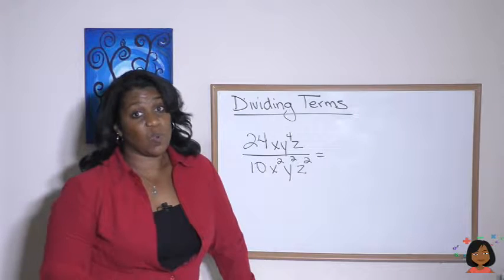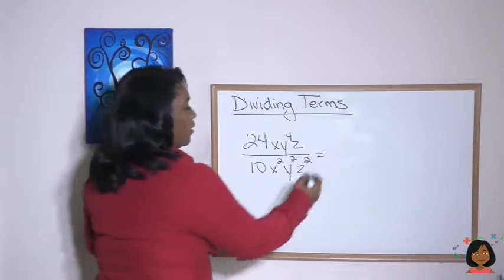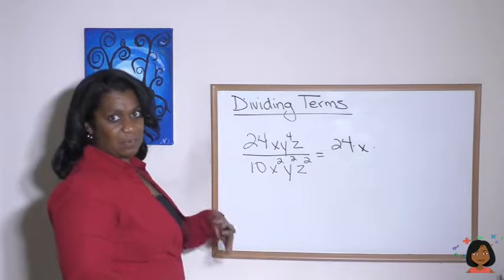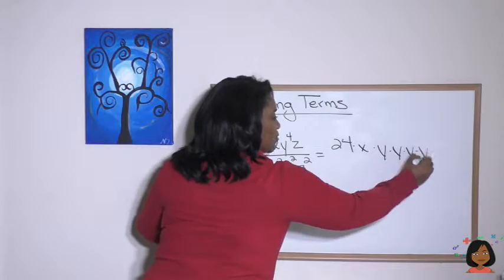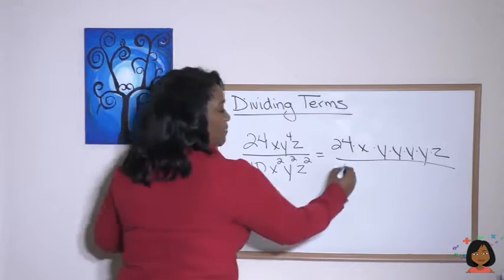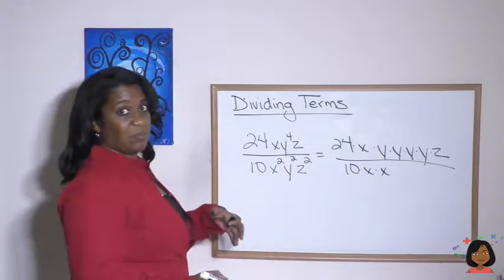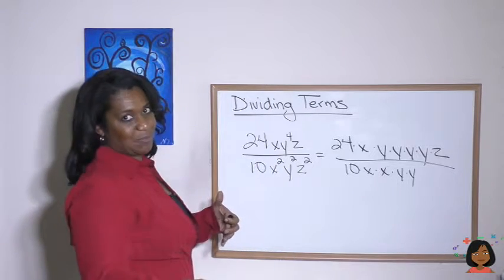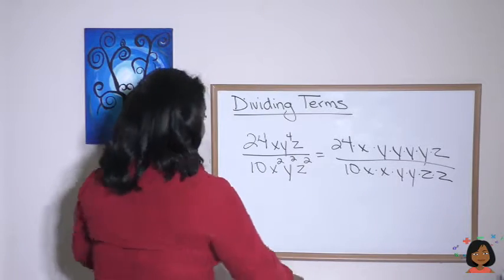Let's simplify this next example. We're going to write everything out without the exponents. We have 24 — we'll keep that. Our x is good. Y to the fourth means we write y four times: y times y times y times y. And then we have just a z at the end. For the denominator, we've got 10. X squared means x times x. Y squared means y times y. And z squared means z times z.